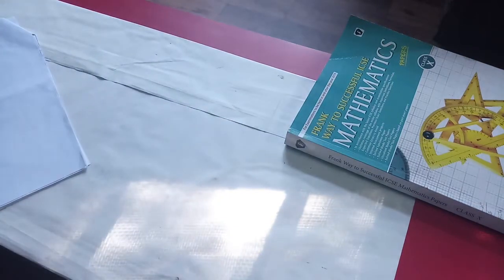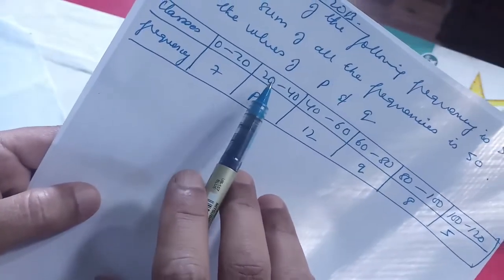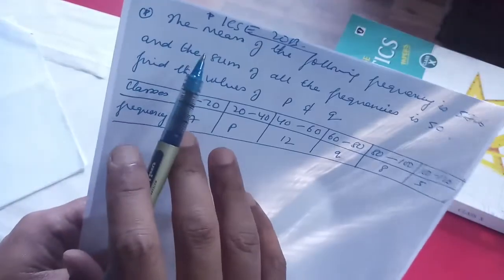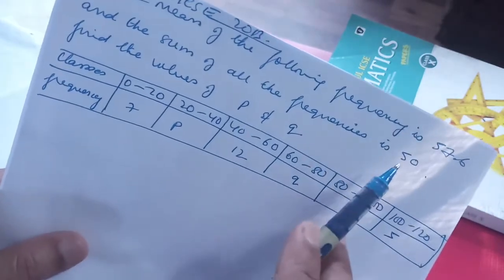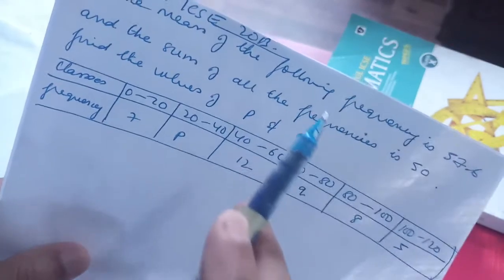Sometimes you also get problems with two missing frequencies. I'm going to solve one next — another ICSE question where in class interval 20–40 the missing frequency is p, and in class interval 60–80 the missing frequency is q. The mean of the distribution is 52.5, and the sum of all frequencies is given as 50. We need to find p and q.